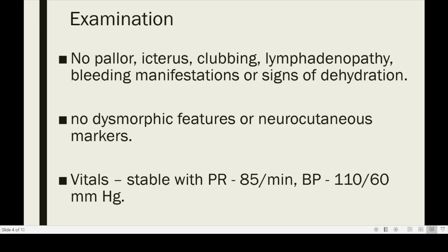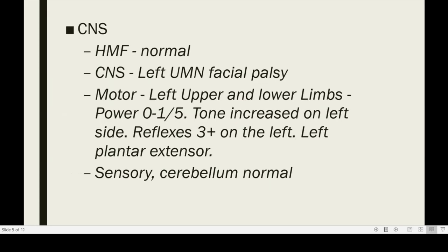On examination, there was no evidence of pallor, icterus, clubbing, lymphadenopathy, bleeding manifestations, or signs of dehydration. He was not dysmorphic, and there were no neurocutaneous markers. His vitals were stable with a pulse rate of 85 per minute and blood pressure of 110 over 60. Neurological examination showed normal higher mental function. He had a left upper motor neuron facial palsy, left-sided weakness with the upper limb showing grade 0 over 5 on the MRC scale, and lower limb grade 1 power. His tone was increased on the left side with exaggerated deep tendon reflexes and an up-going left plantar. There were no sensory or cerebellar abnormalities.